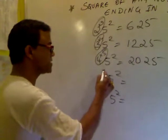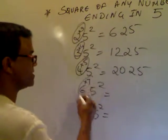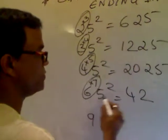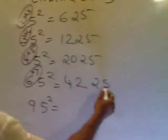After 6 comes 7. 6 times 7 is 42. 5 square is 25.